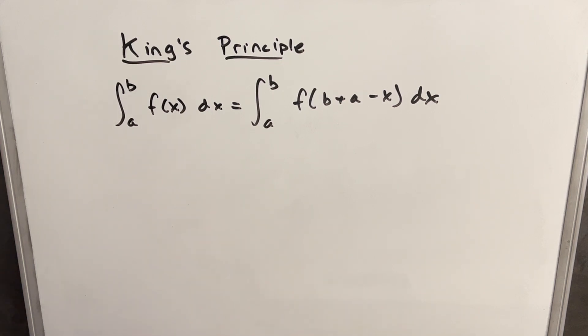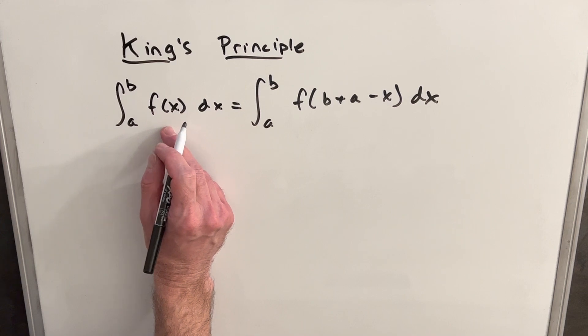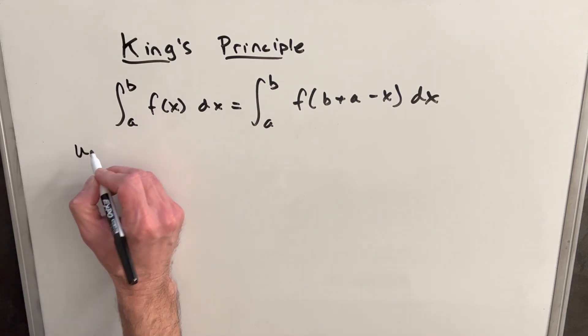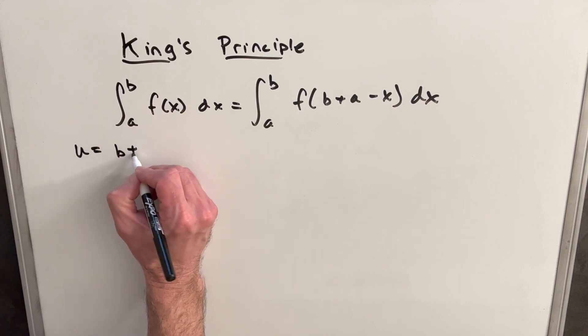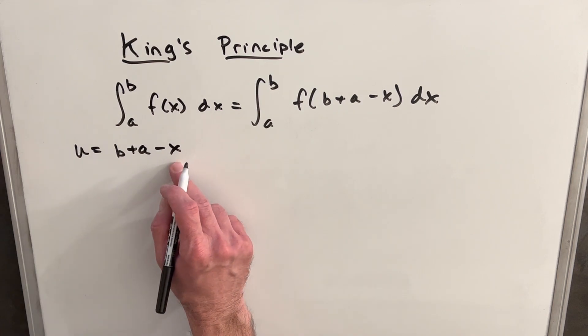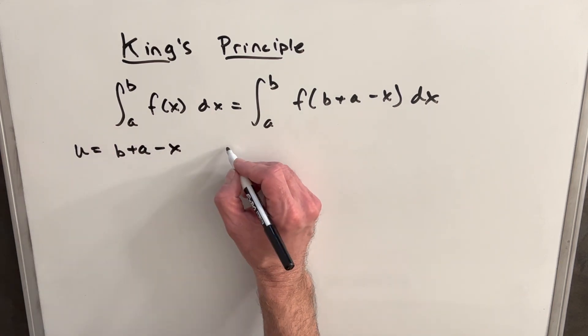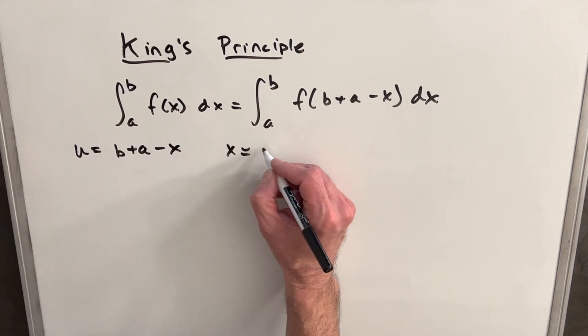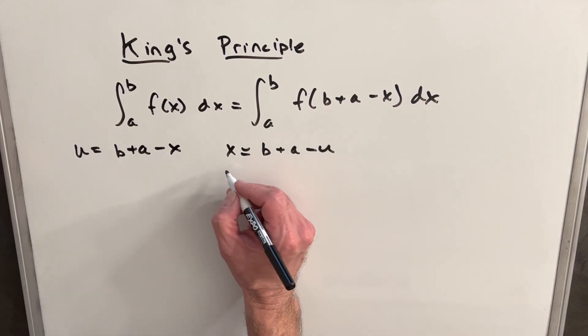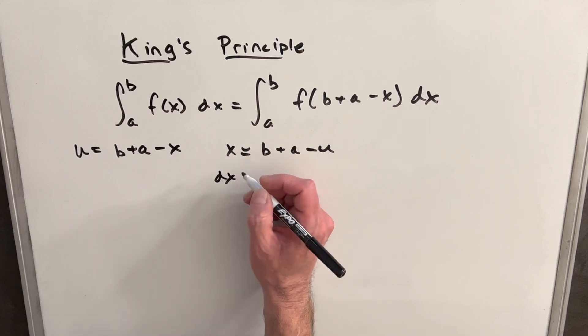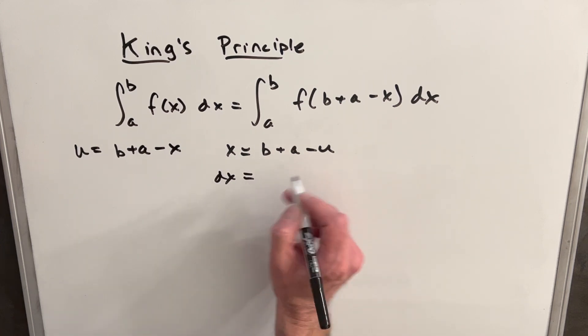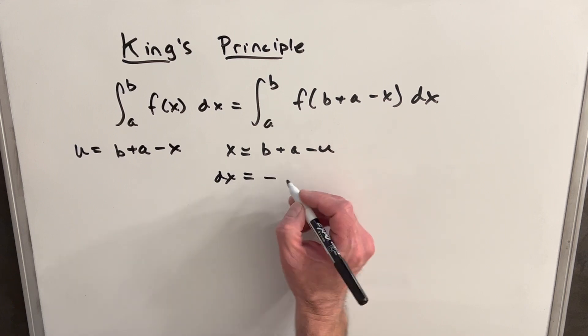So to get started with this, we're just working with this generic integral over here on the left, and I'm going to make a u-substitution. That's going to be u = b + a - x. Then doing that, you notice we can swap the x and u, so we can also say that x = b + a - u. And then taking a derivative, of course our b and a are just numbers, so the derivative of that part is 0. Derivative of minus u is minus du.